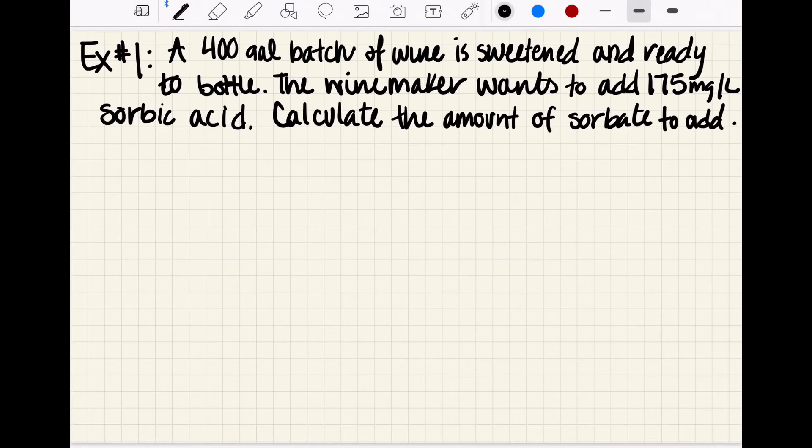We have a 400 gallon batch of wine, it's sweetened and ready to bottle. The winemaker wants to add 175 milligrams per liter of sorbic acid, so that's the sorbic acid rate, it's already been determined by the winemaker so we don't need to make that choice. We're going to use that to calculate the amount of sorbate to add.